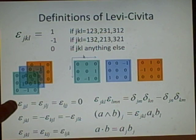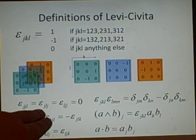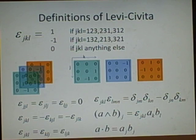Some properties. We have epsilon jjl is epsilon ljj is 0. If any indexes are repeated in the Levi-Civita, then it's automatically equal to 0. Because we have none of these repeated, do we?